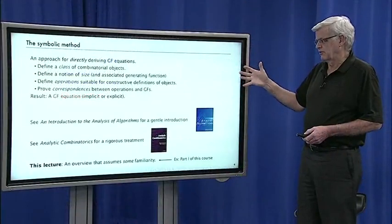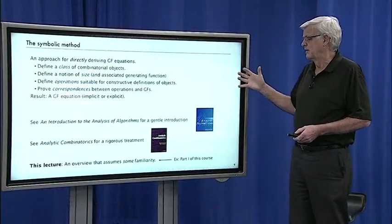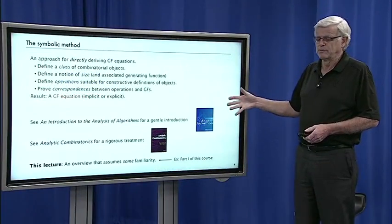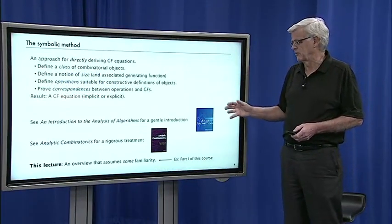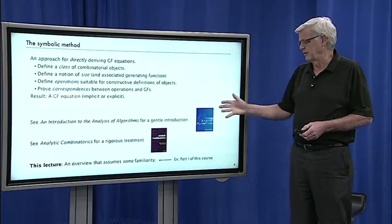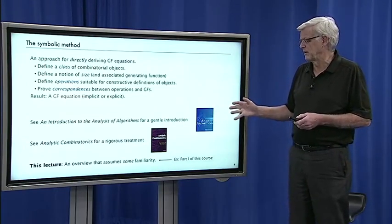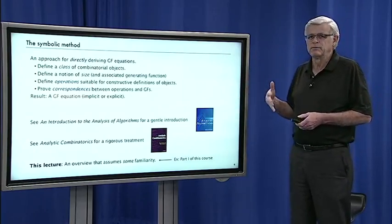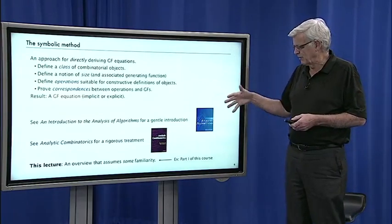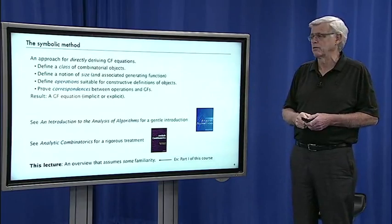Today we're going to talk just about the symbolic method and for the next couple of lectures. There's some easier examples that move a bit slower in part one and in analysis of algorithms. In the purple book, analytic combinatorics has a very rigorous treatment. This lecture is somewhat in between. It's an overview that assumes some familiarity with generating functions and basic mathematics like is covered in part one of this course.